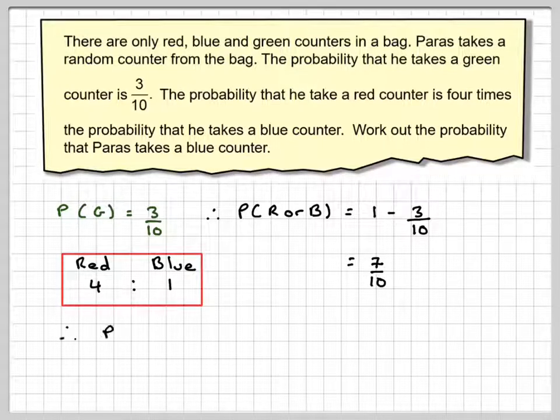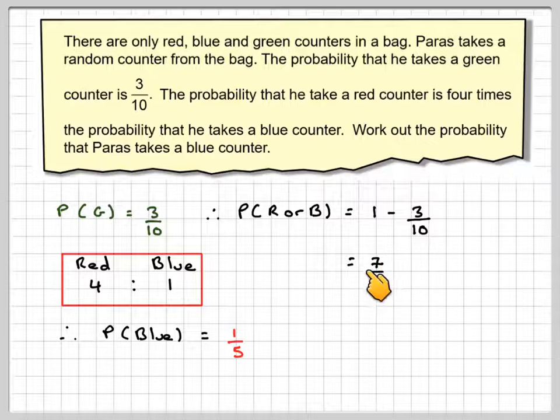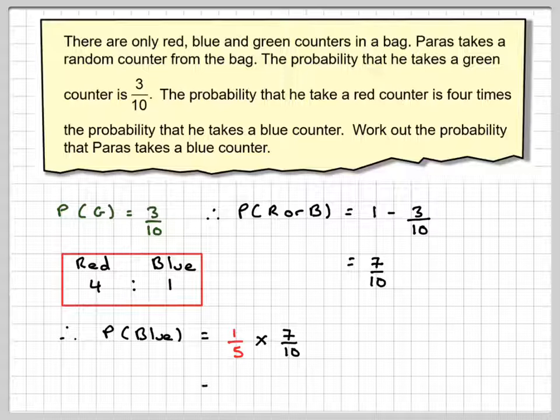Therefore, the probability that it takes a blue will be 1 fifth of the probability of what's left here. So it's 1 fifth times 7 tenths, which is going to be 7 out of 50.